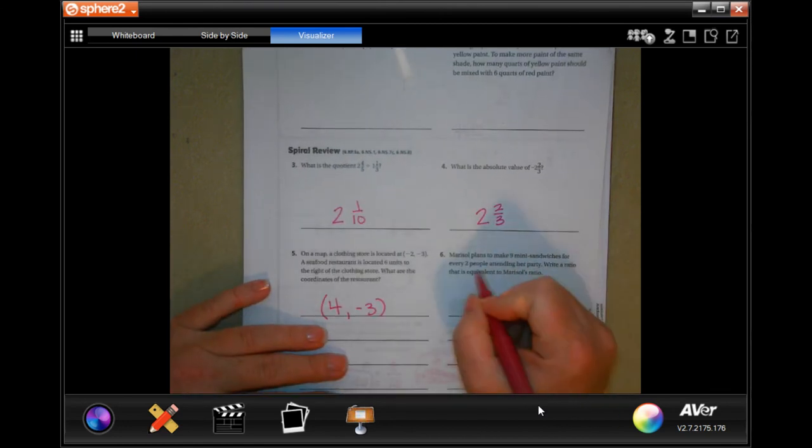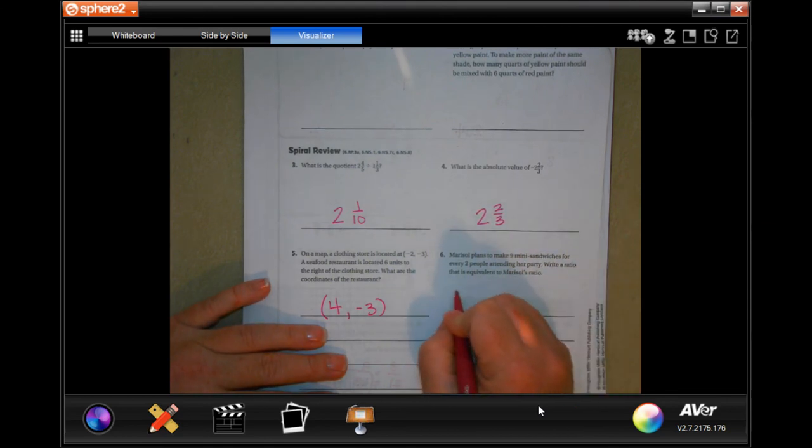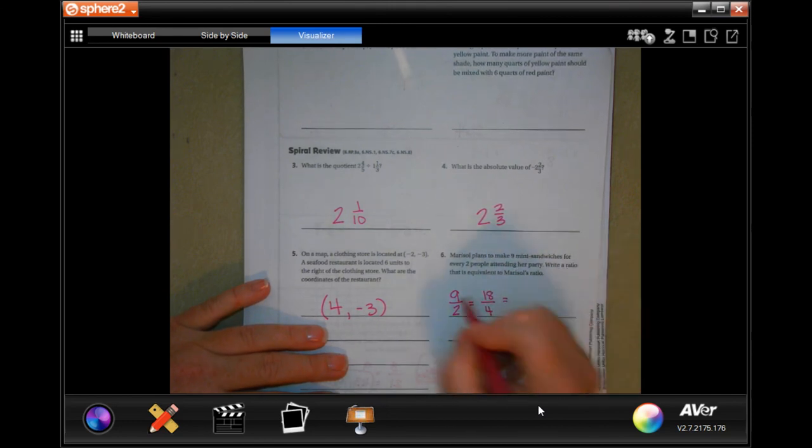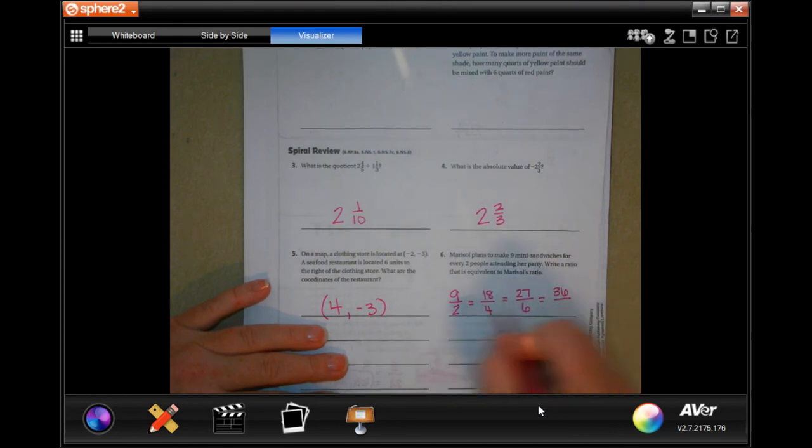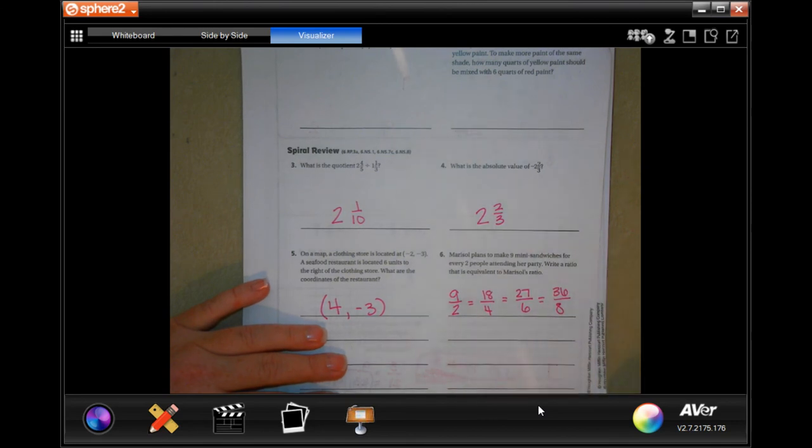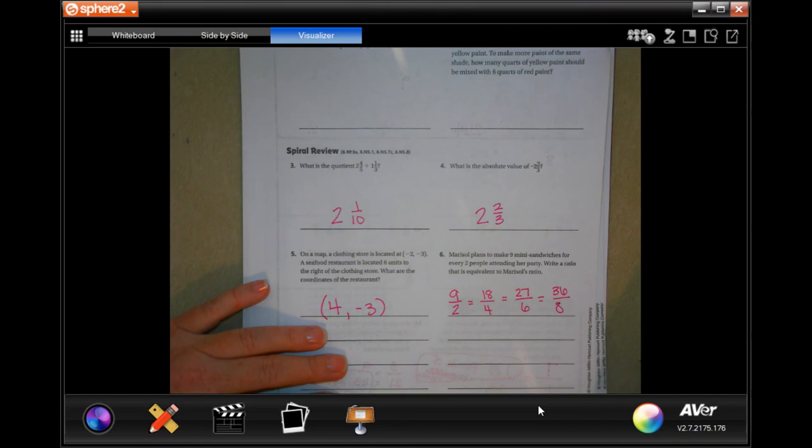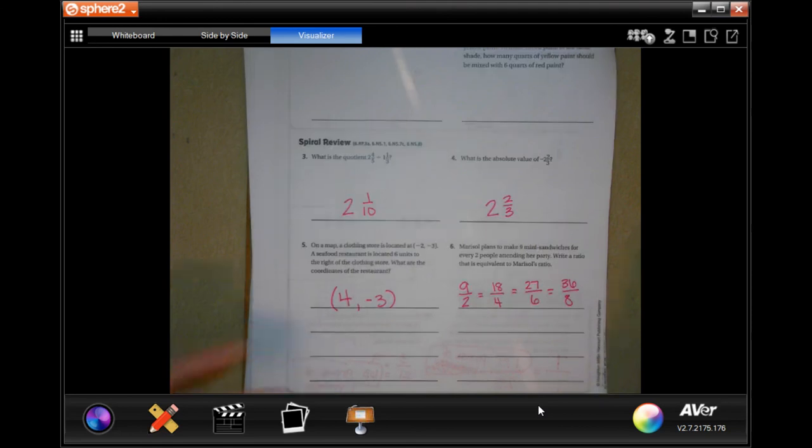Marisol plans to make 9 mini sandwiches for every 2 people attending her party. Write a ratio that is equivalent. So, 9 over 2. Well, if I multiply 9 by 2, I get 18. If I multiply 2 by 2, I get 4. I could do 9 times 3, which is 27. 2 times 3, which is 6. I could do 9 times 4, which is 36. 2 times 4, which is 8. Any of those will work. You just have to write down one of them. You can keep going if you want. You can do 9 times 100 and then 2 times 100. Same thing. As long as you multiply the top and the bottom by the same number.